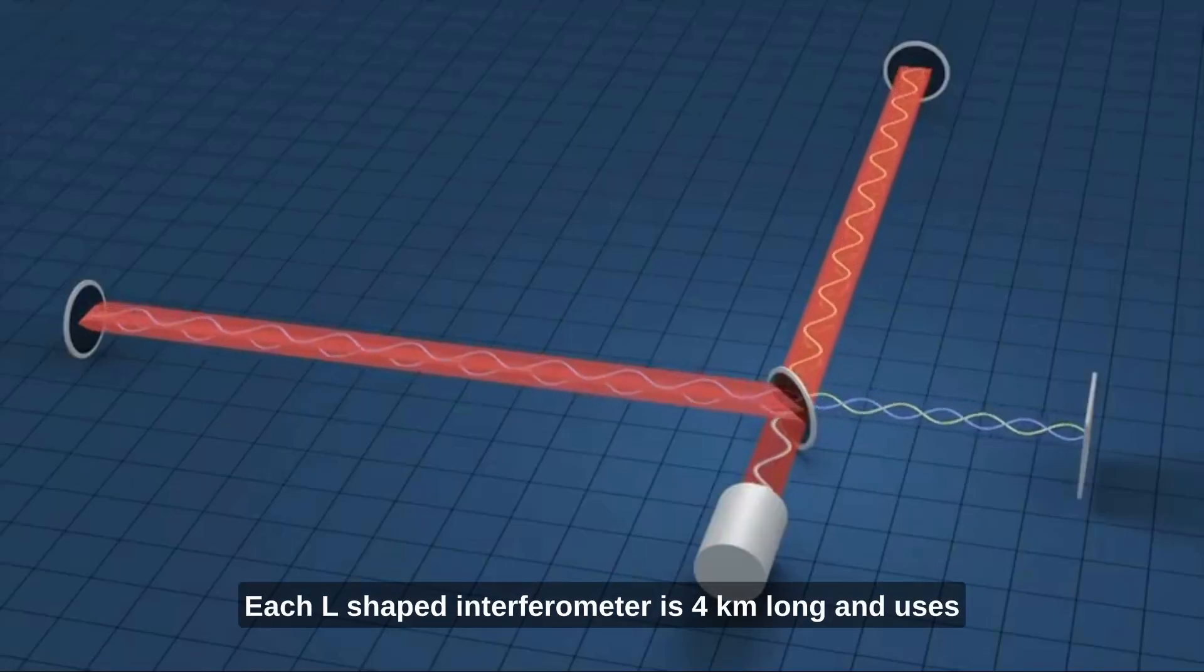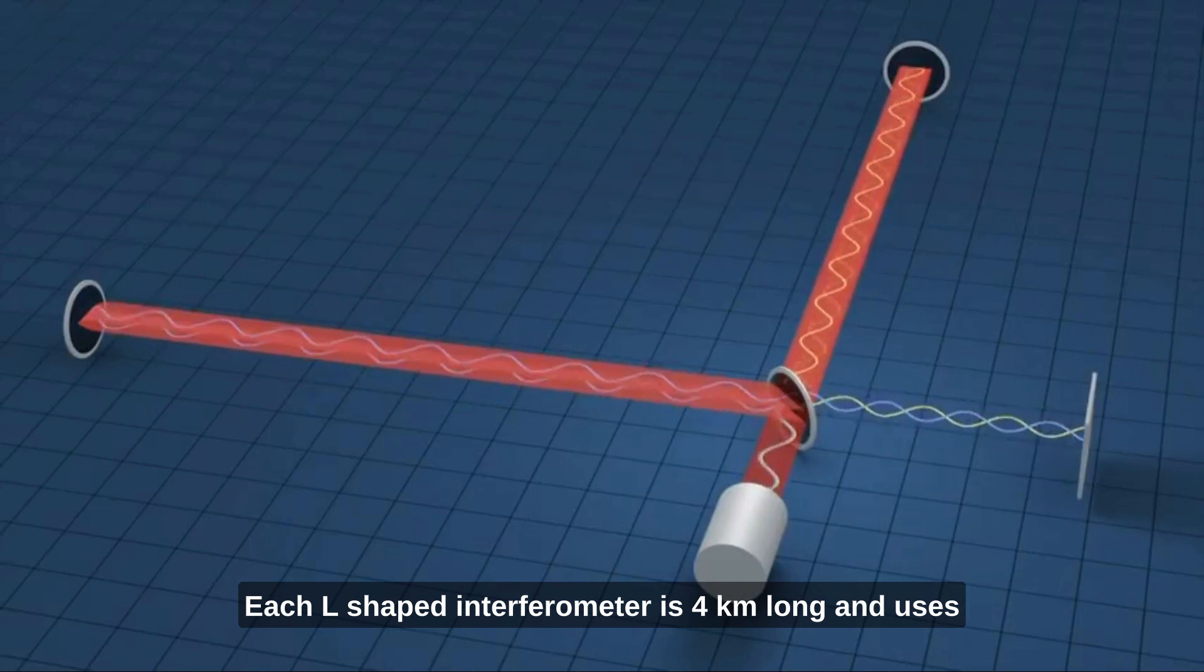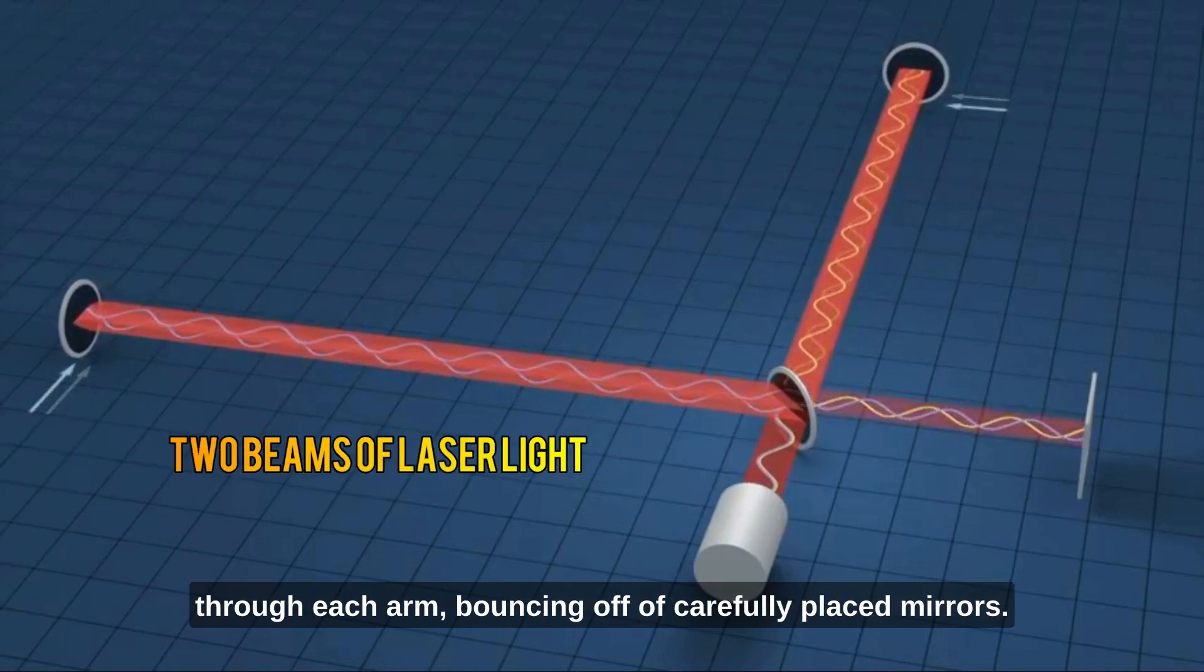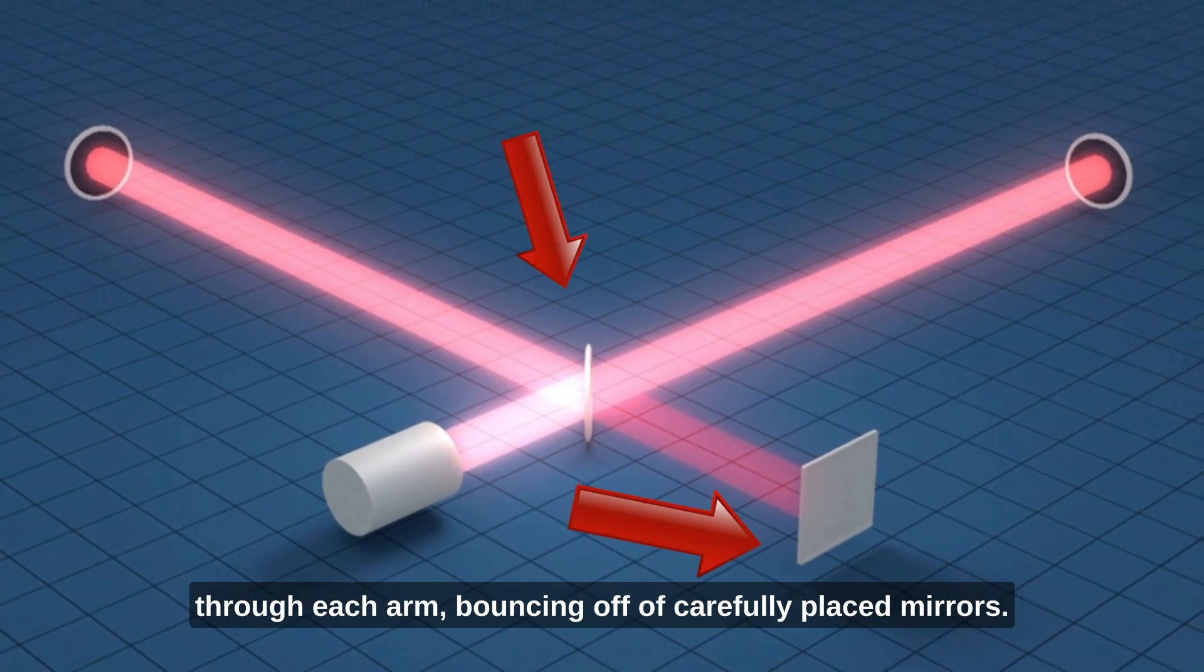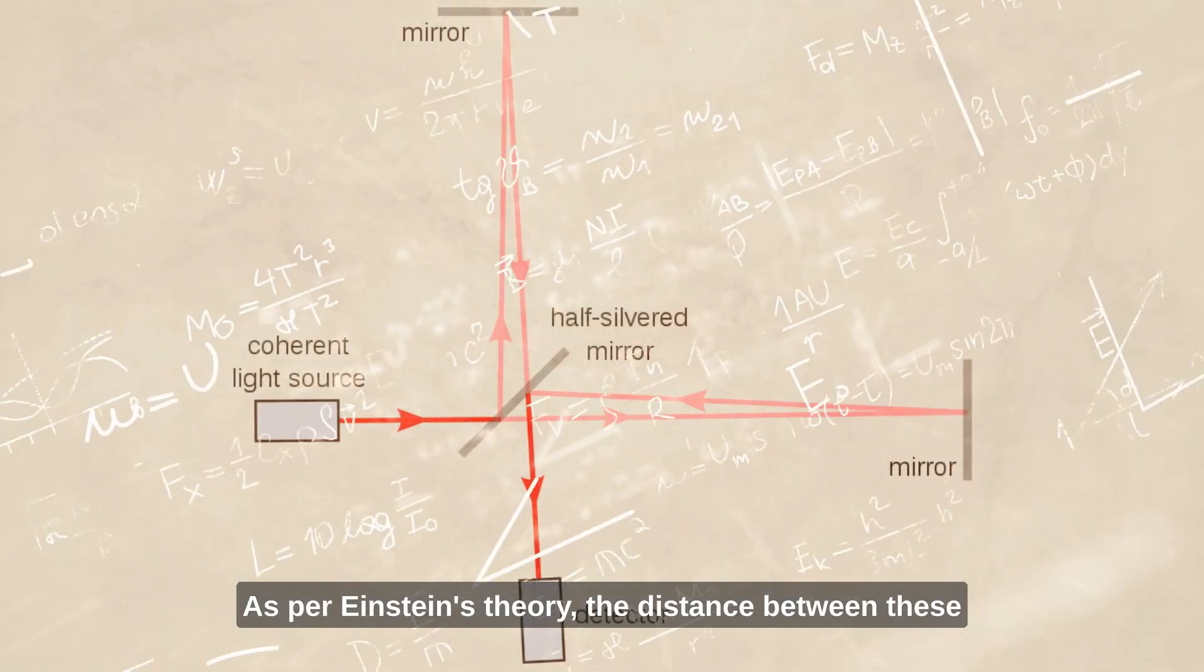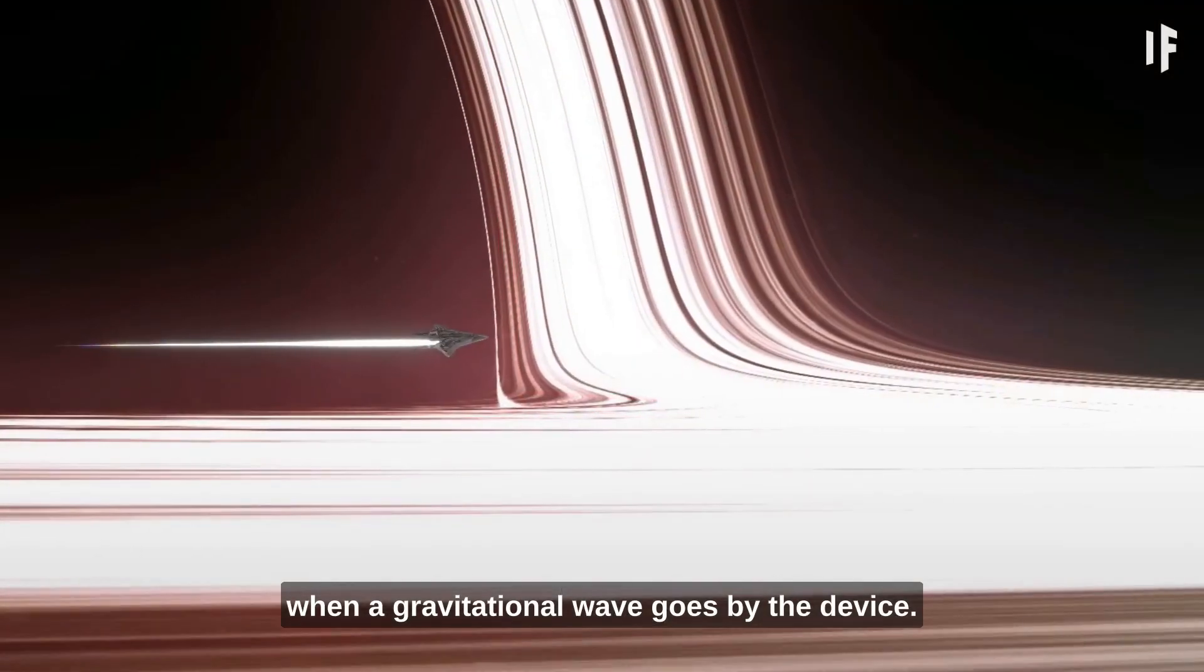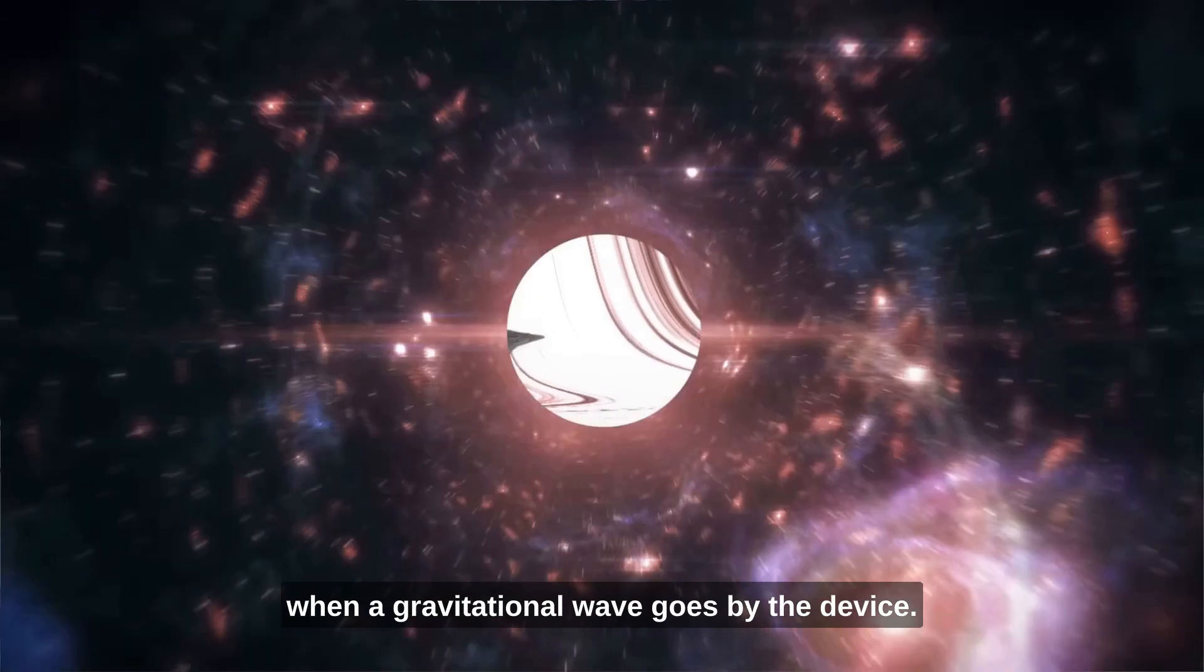Each L-shaped interferometer is four kilometers long and uses two beams of laser light that move back and forth through each arm, bouncing off of carefully placed mirrors. As per Einstein's theory, the distance between these mirrors will change by an infinitesimal amount when a gravitational wave goes by the device.